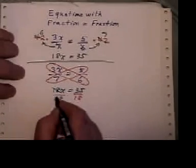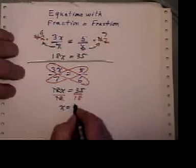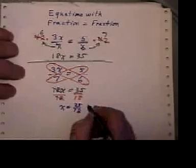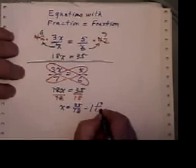The 18's cancel, and I get x equals 35 over 18, or 1 and 17/18ths.